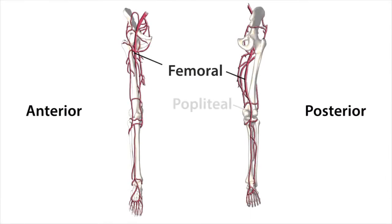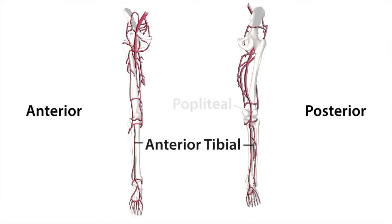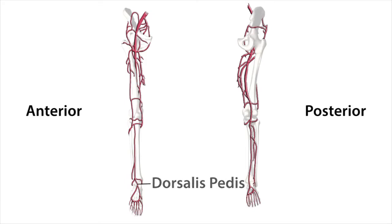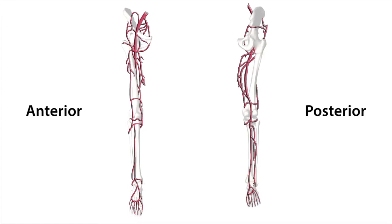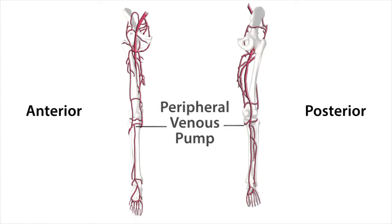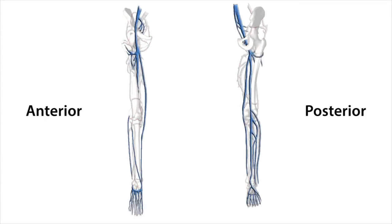The femoral artery becomes the popliteal artery which divides into two branches: the anterior tibial artery and the posterior tibial artery. The anterior tibial artery branches to give rise to the dorsalis pedis. The posterior tibial artery branches to produce the medial and lateral plantar arteries. An important aspect of systemic blood circulation is the peripheral venous pump mechanism located largely below the knee. The primary superficial vein is the great saphenous, which runs down the inner aspect of the leg, culminating in the dorsal venous arch in the foot, seen here as the green vein in the diagram.